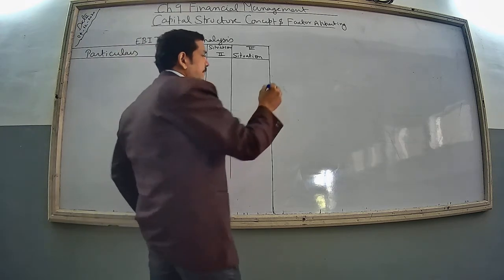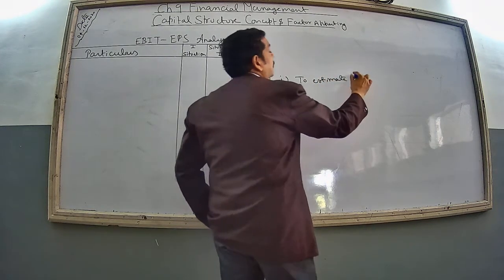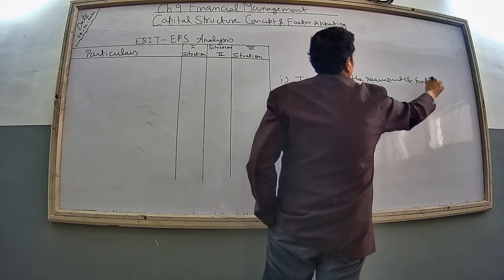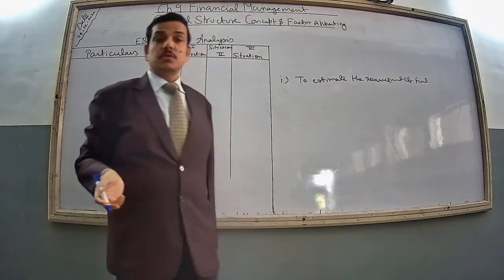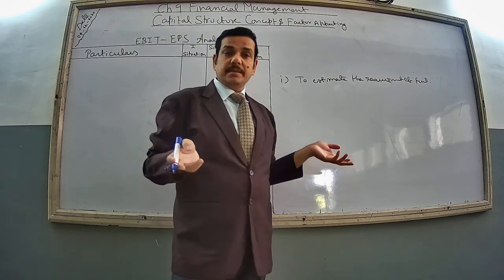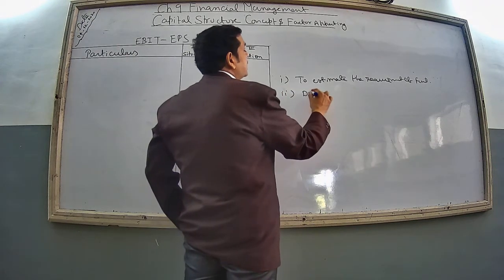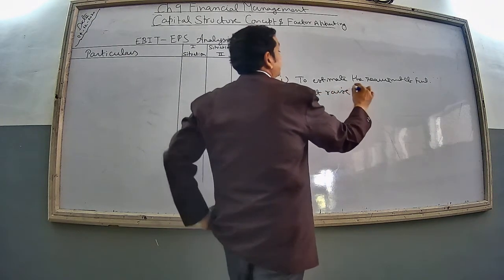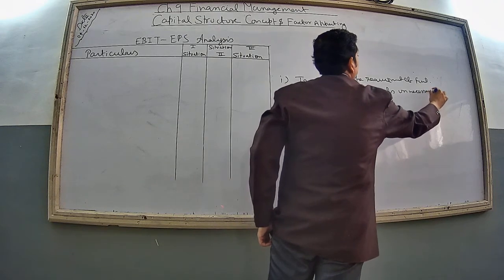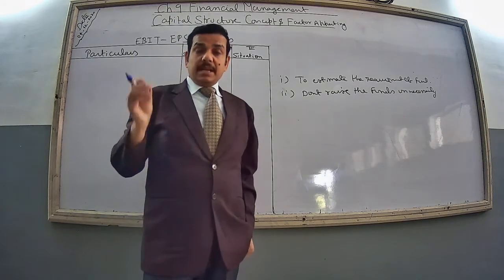It is very necessary to follow the twin objectives of financial planning. First objective: estimate the requirement of funds. You have to continuously assess the situation — when you are supposed to bring the funds. Right now the pandemic is going on so everything is volatile and turbulent; you can't predict anything. So you have to estimate the requirement of the fund. Second objective: do not raise funds unnecessarily.